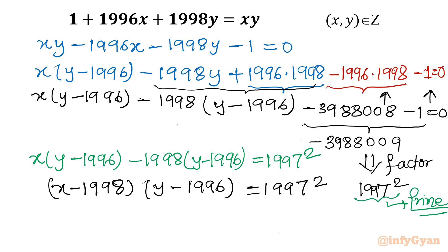Since 1997 is a prime number, we consider how these two products can equal 1997 squared. If both brackets have the same sign — both positive or both negative — then the product is positive. So the factorization options, since 1997 is prime, are: first consideration with both factors positive gives one factor as 1 and the other as 1997 squared.